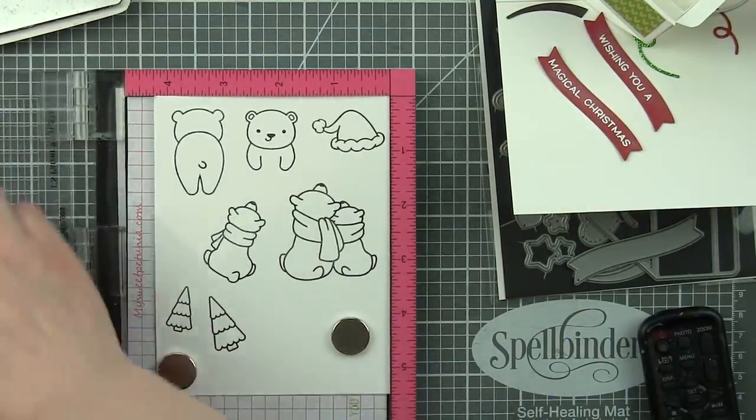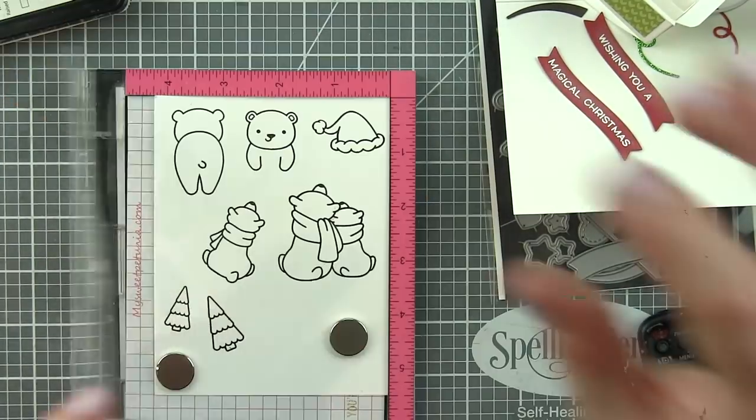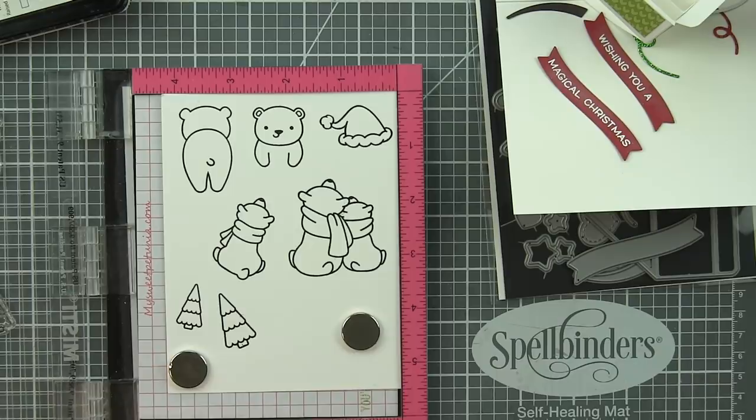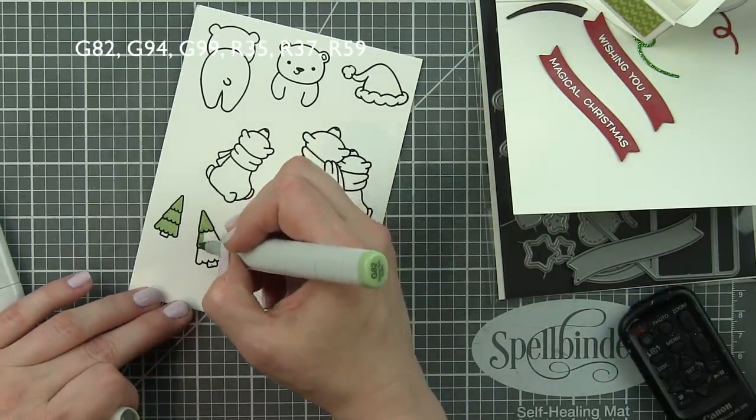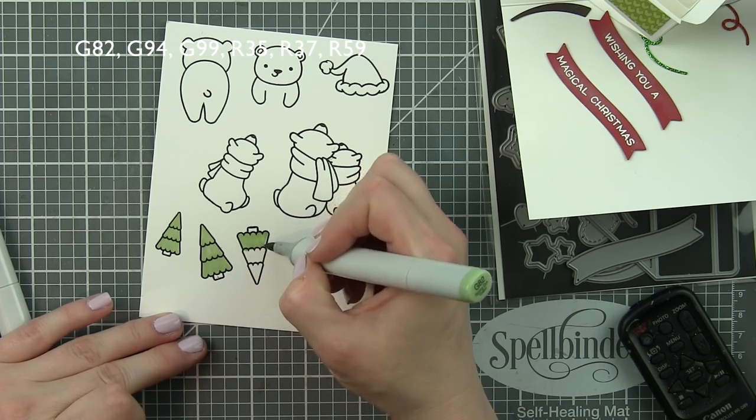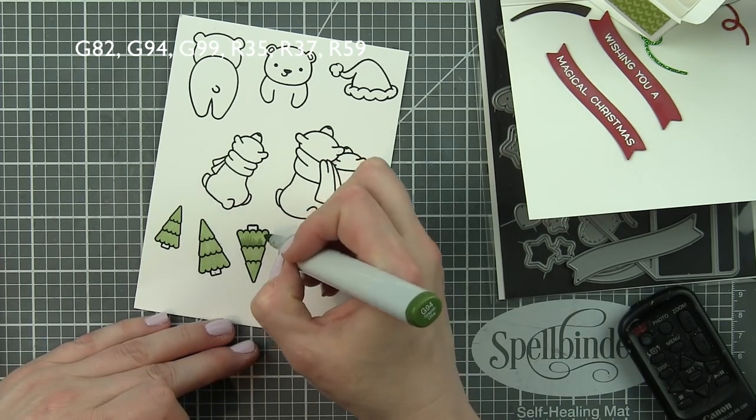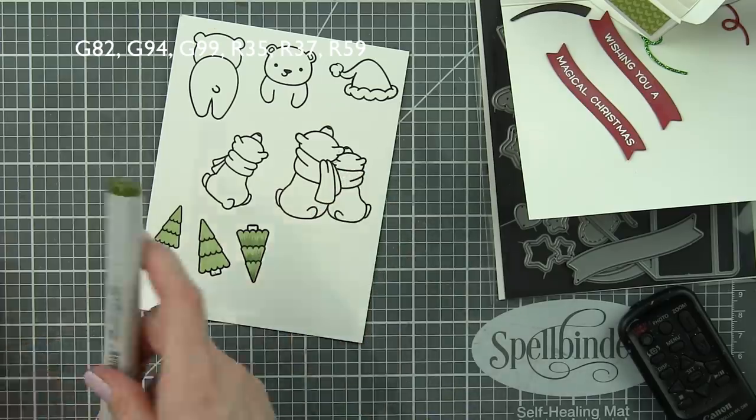Now the majority, the new ones, are from Winter Skies. That's going to be the little bears and the trees. There's also some foxes in this. I love this stamp set. Love, love, love it. I'm going to color everything in with Copic markers. G82, 94 and 99 are my tree colors.